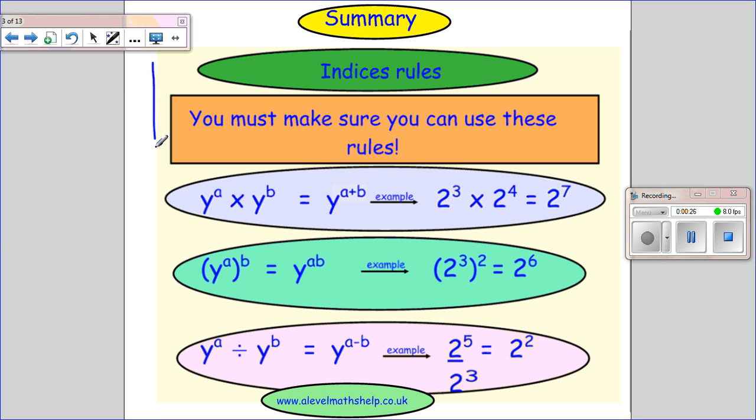Now on this slide I've got the indices rules that you would have had from GCSE, so they shouldn't be new to you. So if I have y to the power of a times y to the power of b, I get y to the power of a plus b. An example of this is 2 cubed times 2 to the power of 4 would give me 2 to the power of 7, because 3 plus 4 gives you 7.